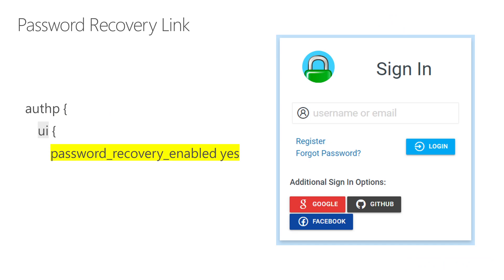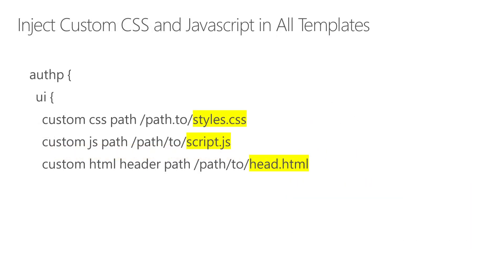If you want a forgot password / recover password link, set 'password_recovery_enabled' to yes in the UI. If you want to inject custom CSS styles across all templates, use the 'custom_css_path' directive pointing to a CSS file, which will appear on all pages. Same idea for 'custom_js_path'—for example, to inject Google Analytics JavaScript. There is also a 'custom_html_header' directive if you want a different HTML header, such as different author or description metadata.